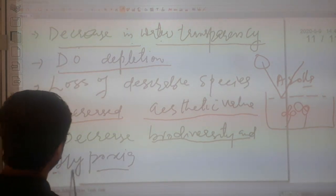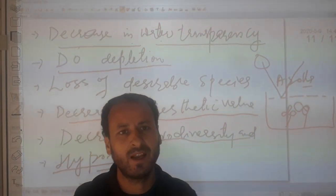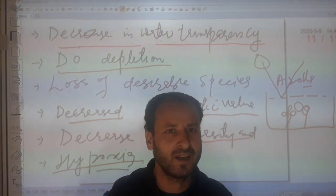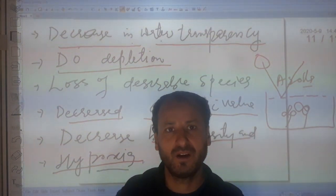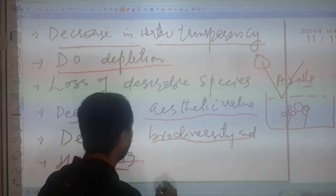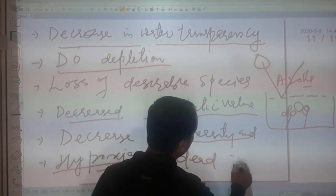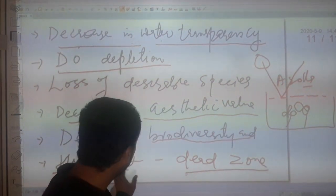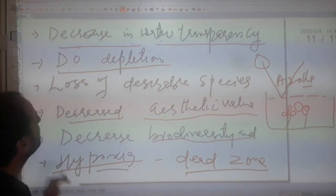Then we have hypoxia — less availability of oxygen, especially at the bottom of the lake — which results in death of organisms due to unavailability of oxygen. This region is known as the dead zone, lying at the bottom of the lake. Hypoxia simply means less availability of oxygen.